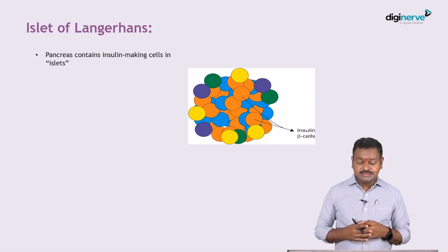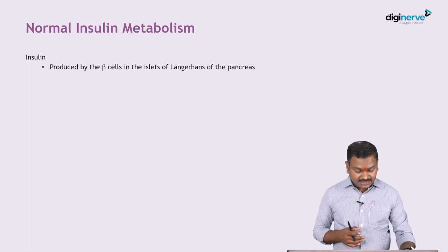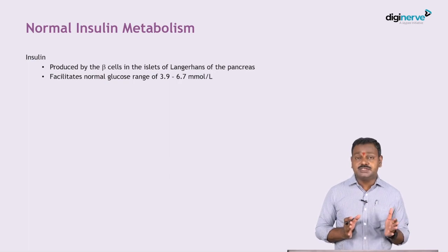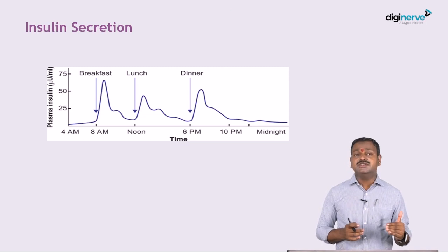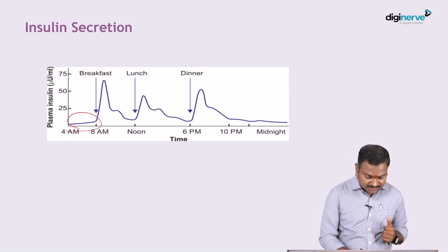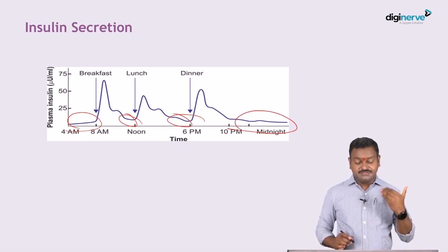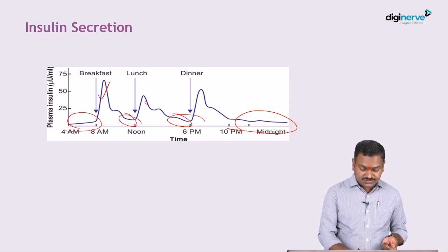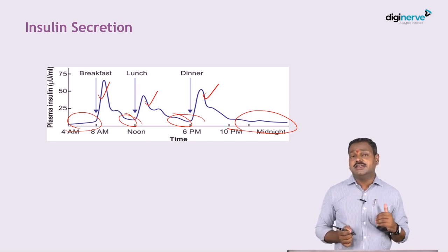The basic problem is at the islet cells of Langerhans, where the beta cells secrete insulin. Normal insulin is produced by the beta cells in the islets of Langerhans and maintains glucose in the normal range of 3.9 to 6.7 millimoles per liter. There is a basal insulin secretion ongoing, and whenever there is a meal — breakfast, lunch, dinner — there is a surge of insulin to take care of the postprandial hyperglycemia.